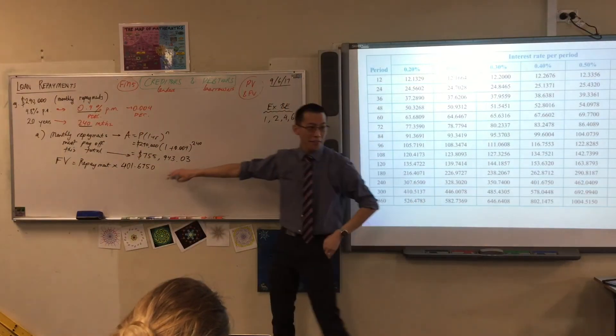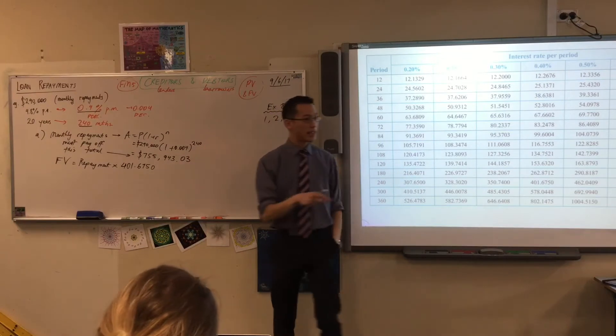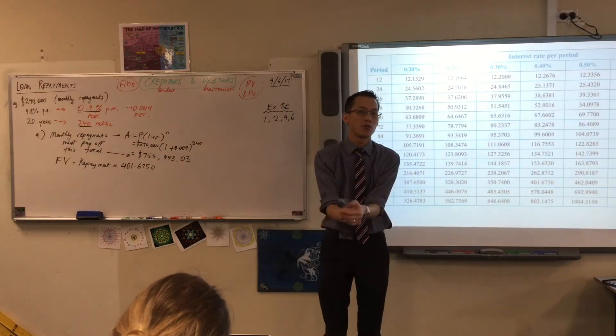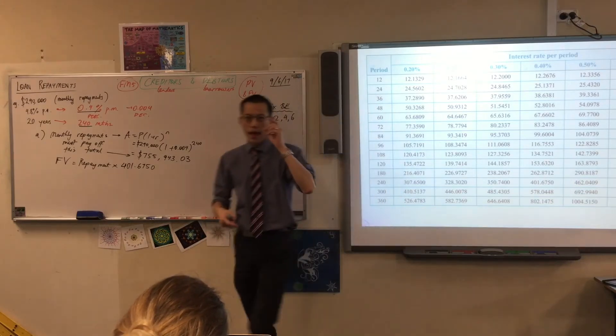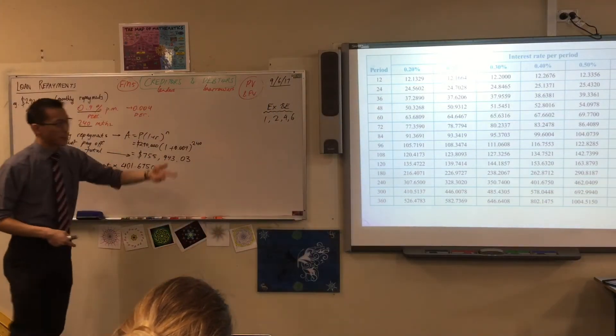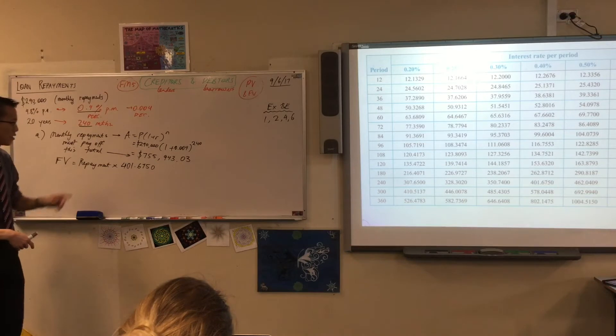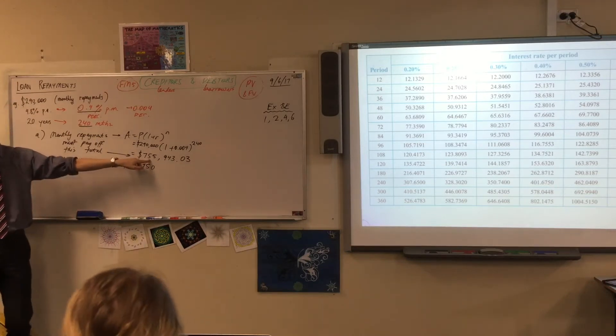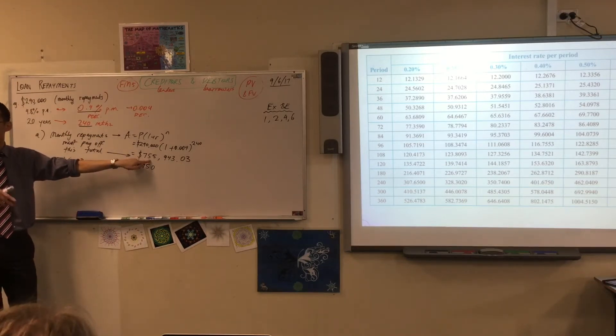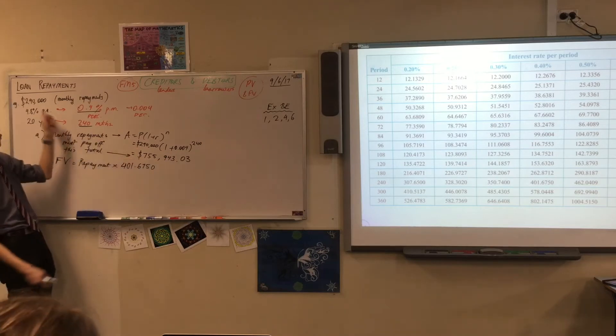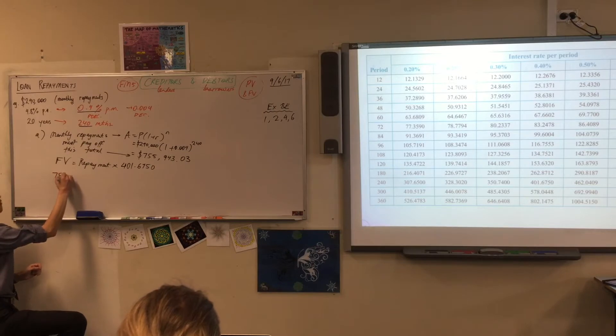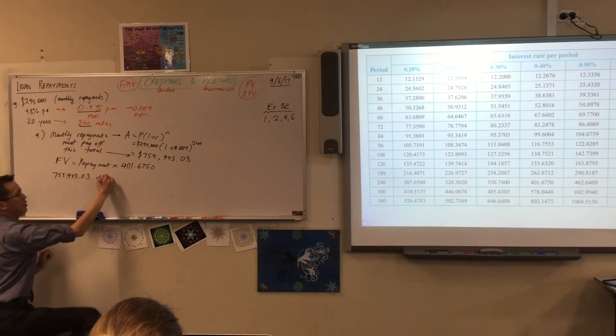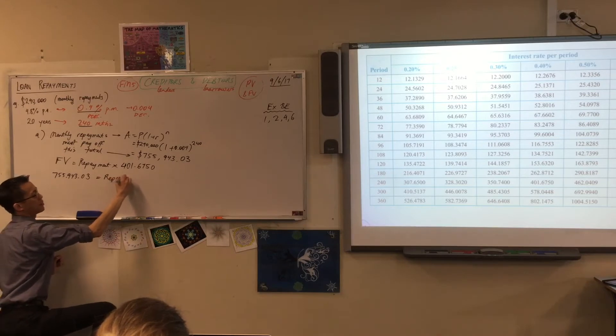Now, before we go on, please think about what this is saying. What this is saying is there's some repayment. That's the number I'm trying to work out, which is why I've written repayment, because I don't know what it is. And after 240 lots of this 0.4% interest, I want it to get to this future value. Because that's the actual debt that I'll end up paying off. So, therefore, the future value is going to be $755,943.03, is your repayment times that.